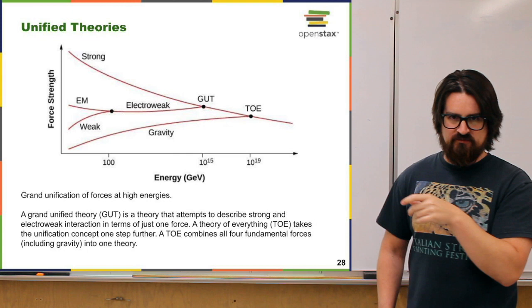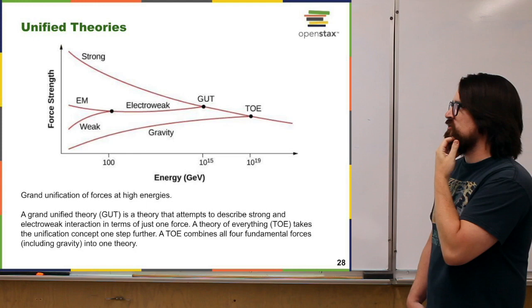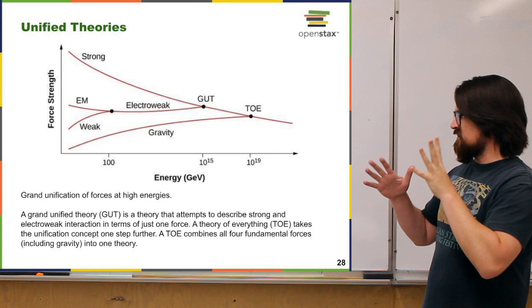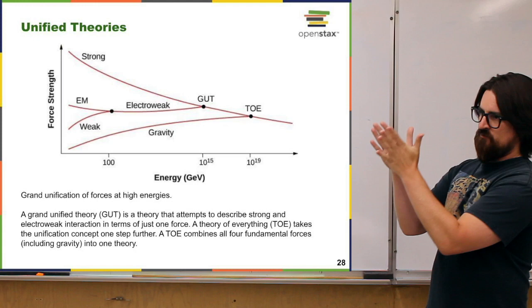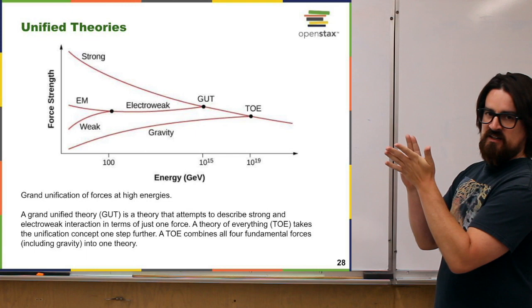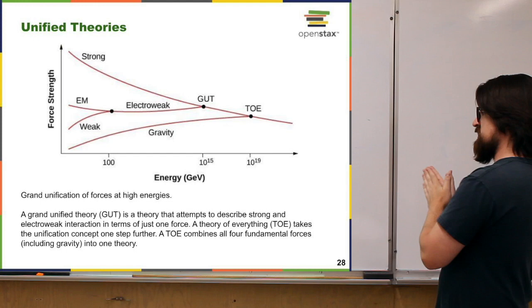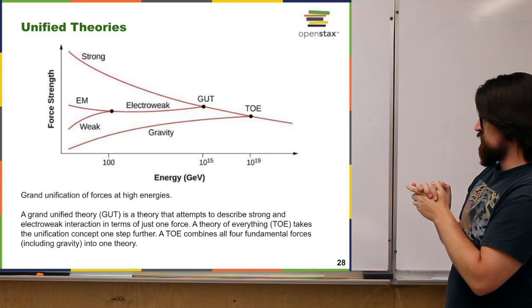That unification happens at about 100 giga electron volts. It wasn't until fairly recently that we could achieve those energies, but at this point we achieve energies like 10 to 100 times that. It's thought that if you go to higher and higher energies, the strengths of these forces come together to the same level and eventually combine. If you combine the electroweak force and the strong force, those combine at a certain energy scale — what we call a Grand Unified Theory: a theory describing the unification of the strong, electromagnetic, and weak forces. At even higher energies, it's thought that gravity then combines with all the other forces too, and we get what's called the Theory of Everything — the TOE. Great names.